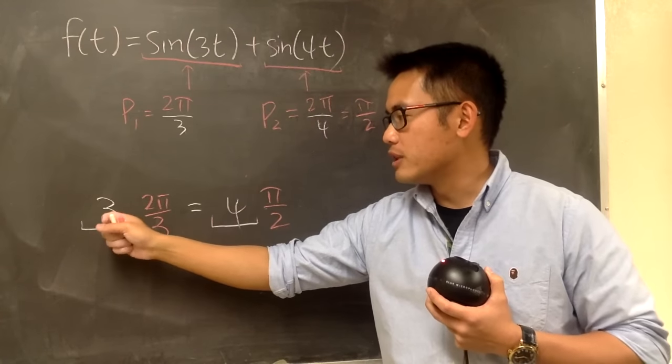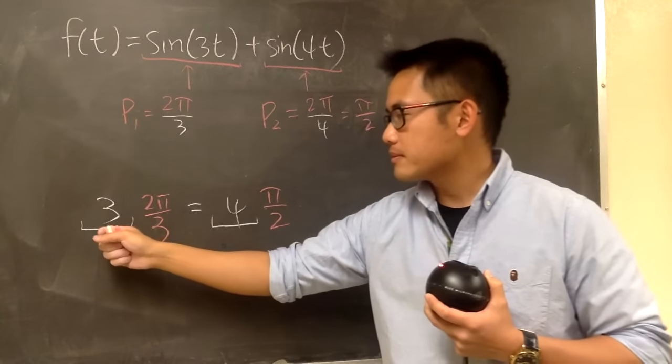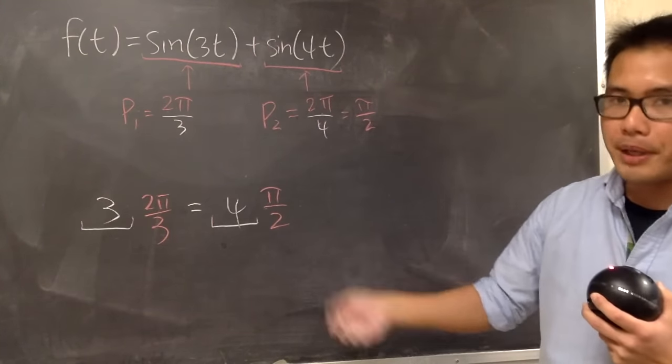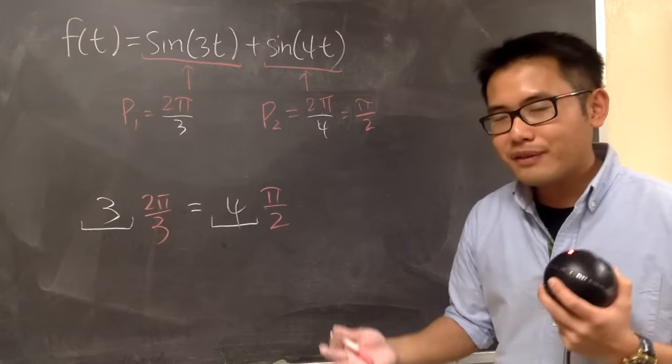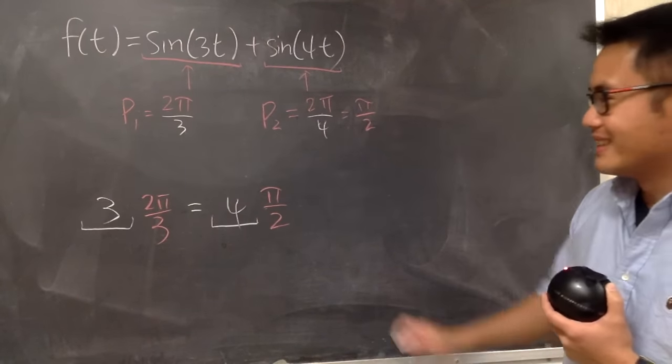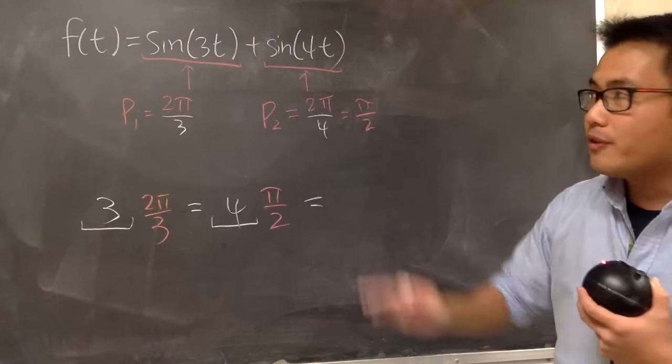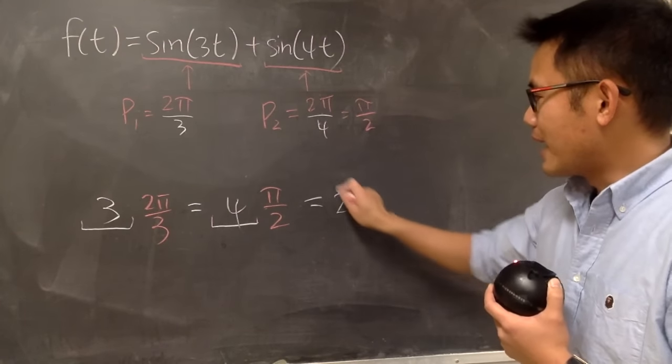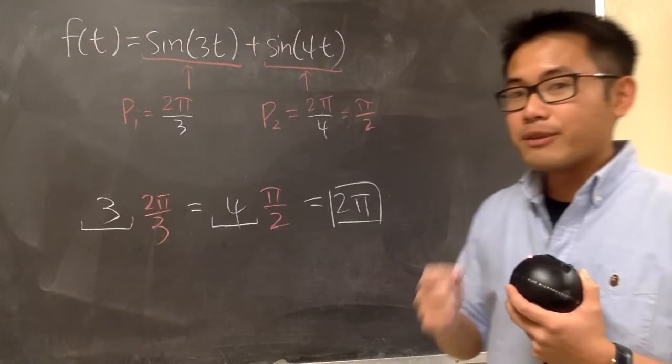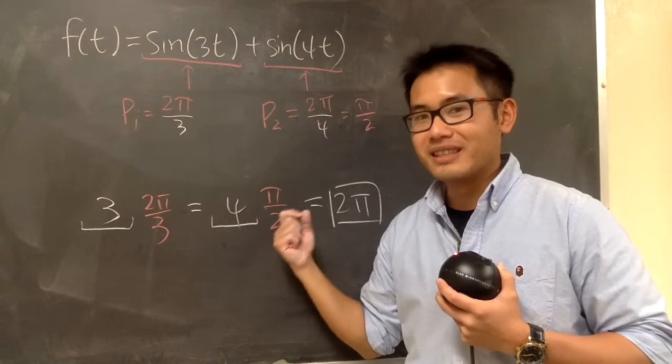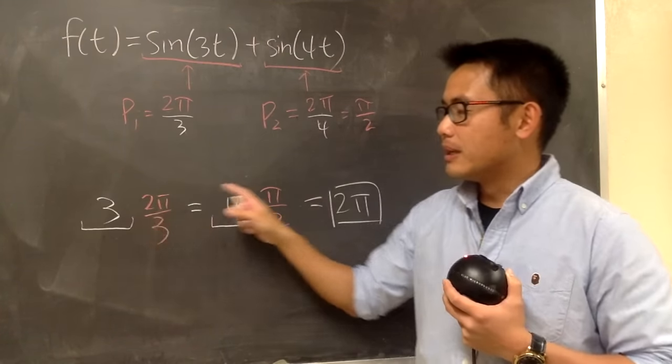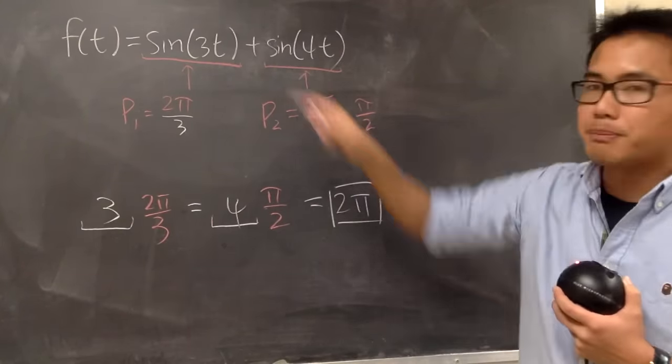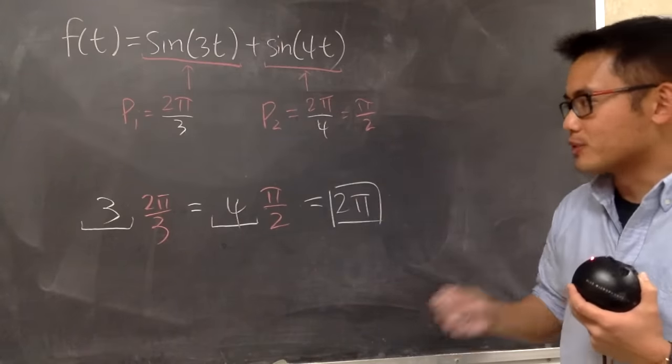We have non-zero integers here and here, so that this integer times the first period is equal to the second integer times the second period. We haven't answered the questions yet, though. So what is a period of this? Well, a period of this right here is just that wherever you multiply this right here. This is 2π. And you just have to make sure you find the smallest possible integers to make this happen. The smallest positive integers to make this happen, then in this case, this right here will be a period for this particular sum of two periodic functions.